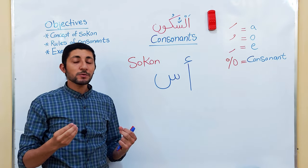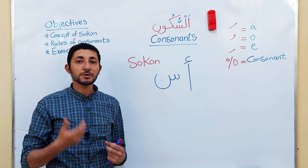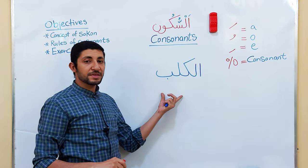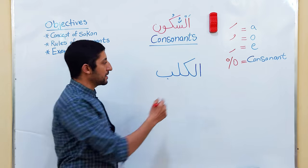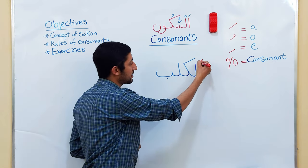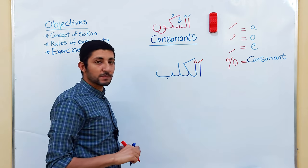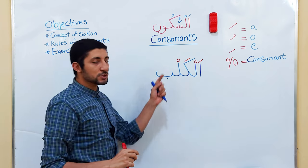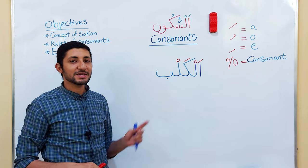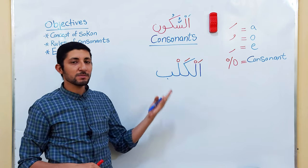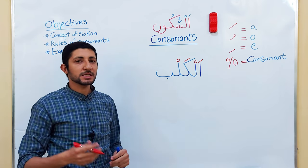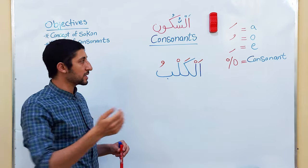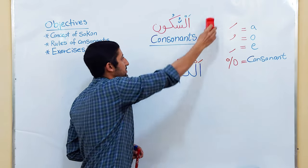Now I want to explain three important rules about consonants in Arabic. Let me use the same example from the previous lesson — the word meaning 'the dog.' The first letter is labeled with Fathah, the second with Sukoon, the third also with Fathah, and the fourth with Sukoon. The last letter we will leave free because we don't know which label it will get — it might be Damma, Kasra, or Fathah. I prefer to leave it empty rather than assigning Damma by default.